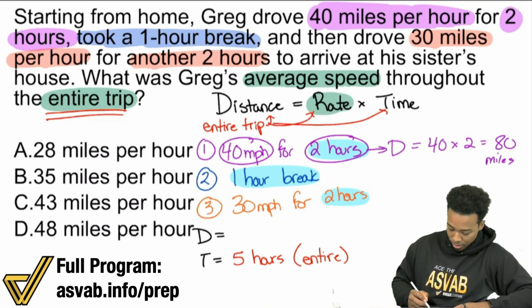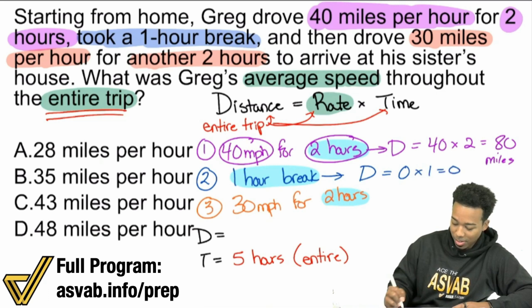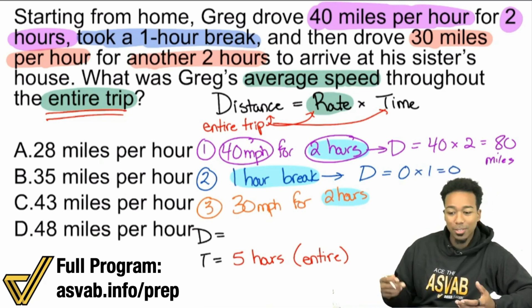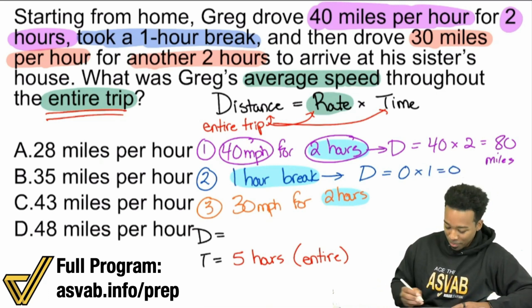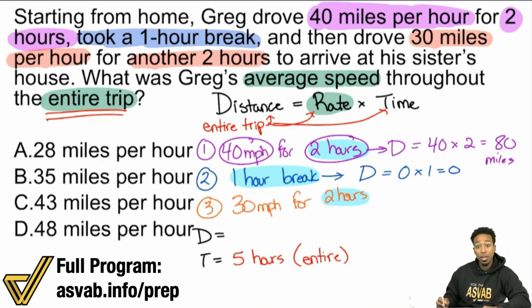For the second part, we see that we took a one hour break. So the distance equals my rate is zero times one hour, which is still going to be zero. We have zero miles for that second part of the trip. And then lastly, for the third part, 30 miles per hour for two hours, that's going to be 30 times two, which is 60 miles.